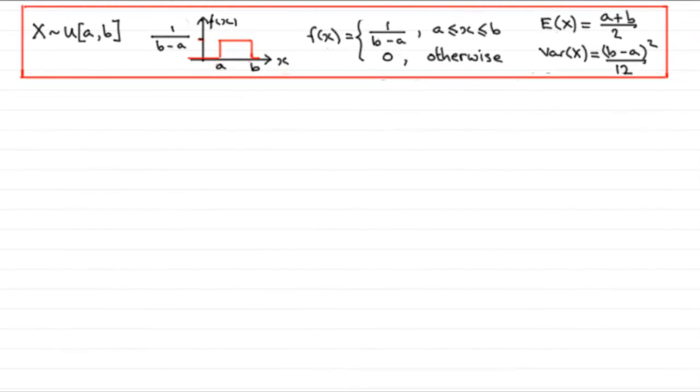Hi, welcome to this video where I'm going to show you how to prove that the expected mean E(X) is equal to (a+b)/2 for a uniform continuous distribution.